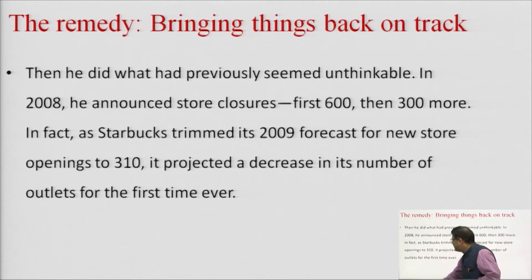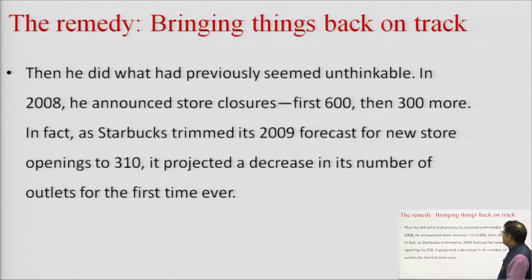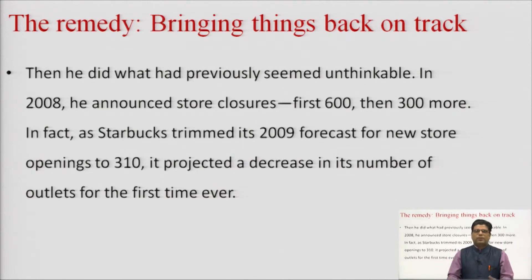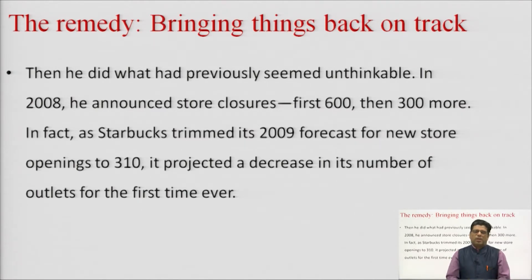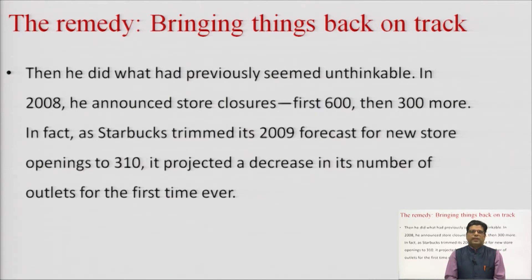What was the remedy and how were things brought back on track? Howard Schultz initially offered different types of remedies — he did a lot of analytics, market study, and study of competitors, and consulted with many CEOs of other companies. But all these things were not working, as he continued to see a sustained dip in profits. Eventually, under the pressure of losses, he started shutting down Starbucks stores — something that previously seemed unthinkable.